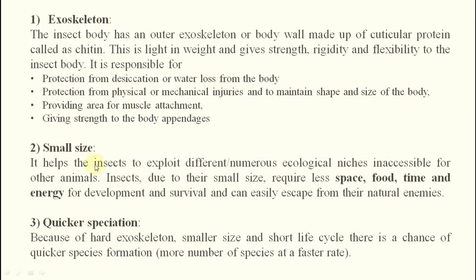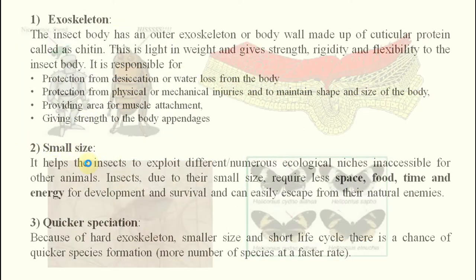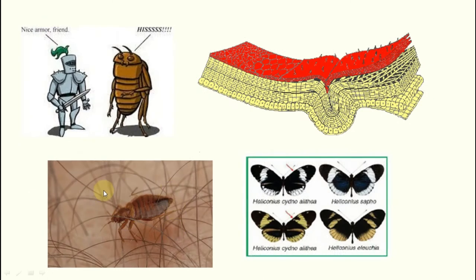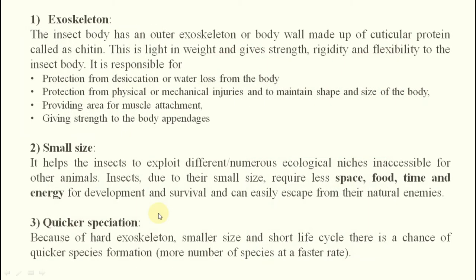The second point under structural perfection is small size body. Due to small size, insects require less space — meaning no competition for space, food, time, or energy. As a result, the population can increase rapidly, and they can easily escape from natural enemies.